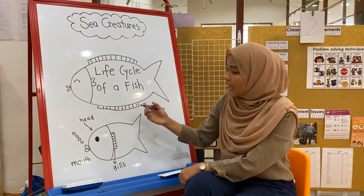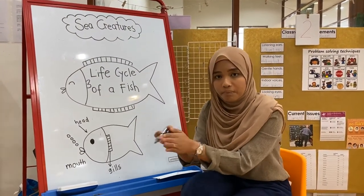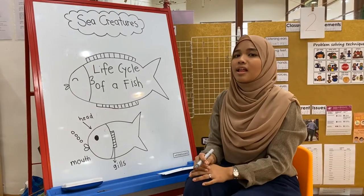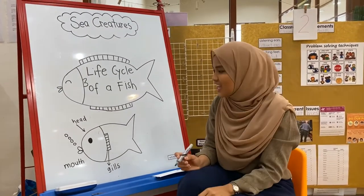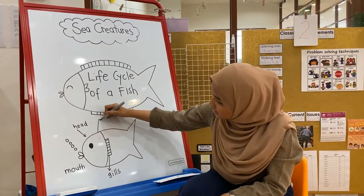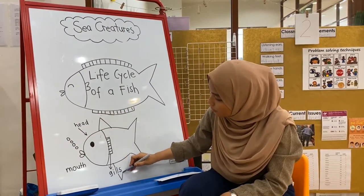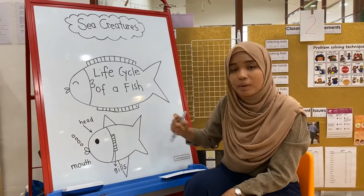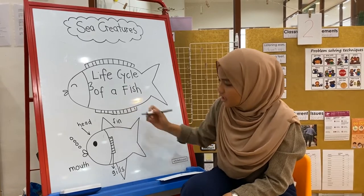On top of that, fishes also swim. What helps fishes to swim? Yes, their fins — they're so smart! Fins help fishes to swim. They have one at the top and one at the bottom. So these are called fins.